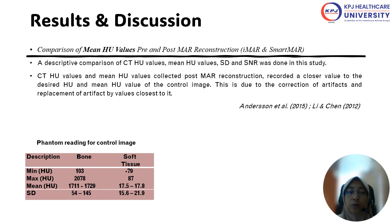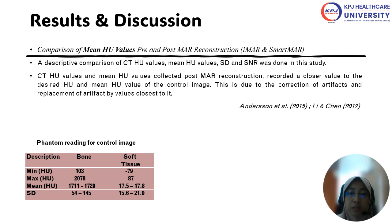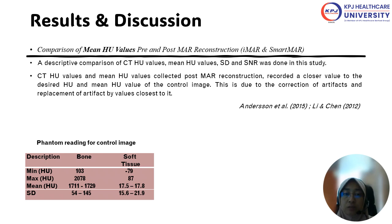As a result, when comparing the mean HU values for the MAR reconstruction — either iMAR or SMARTMAR — we can see that there are collectively closer values within the range towards the control image. The phantom reading for the control image is used as reference, and most of the reconstructed values reach close to that, although not all.